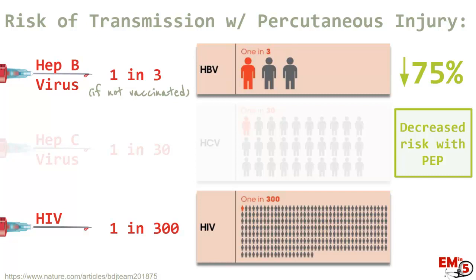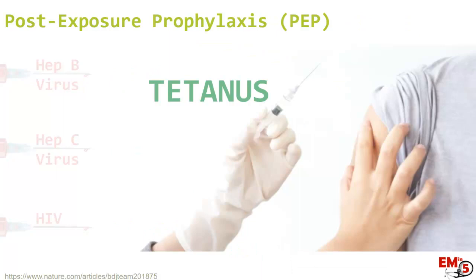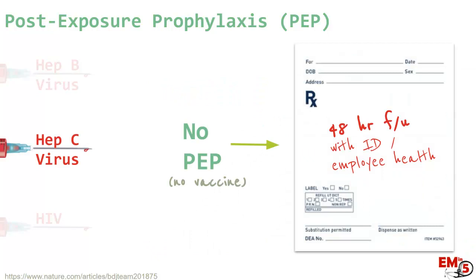First, make sure your patient has their tetanus up to date. For hepatitis C, this is actually the easiest — there is no post-exposure prophylaxis available and there's no vaccine, so you don't need to ask about vaccine status. The only thing to do for hep C is draw the blood work and then have them follow up in 48 hours with infectious disease and employee health for further management and workup.